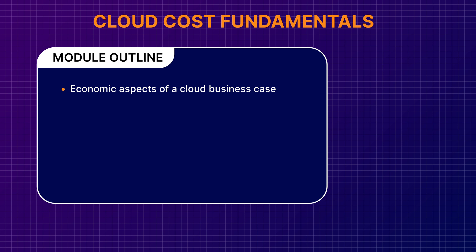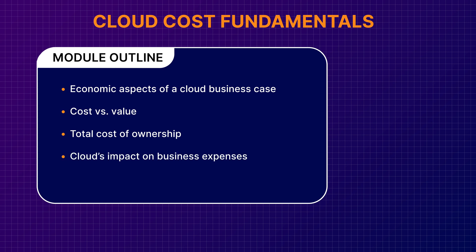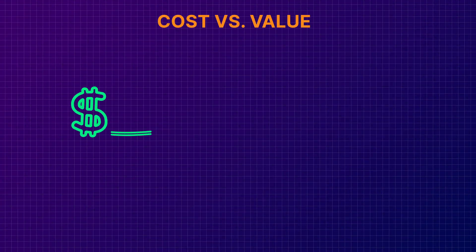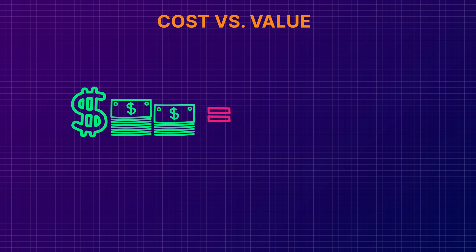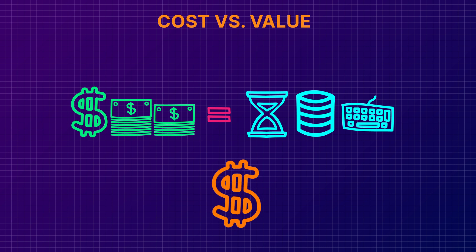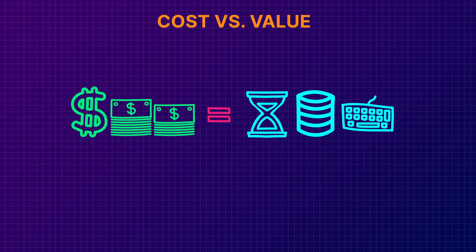We'll cover the important distinction between cost and value. You're going to learn about total cost of ownership and how we can calculate it, or at least approximate it. We'll also learn about how the cloud can influence our business expenses. When most people talk about costs, they're usually referring to how much money it takes to acquire something. Cost isn't limited to money — it can be described in terms of time or resources. Usually cost is a number or figure that most people try to minimize, but cost itself is really one dimensional.